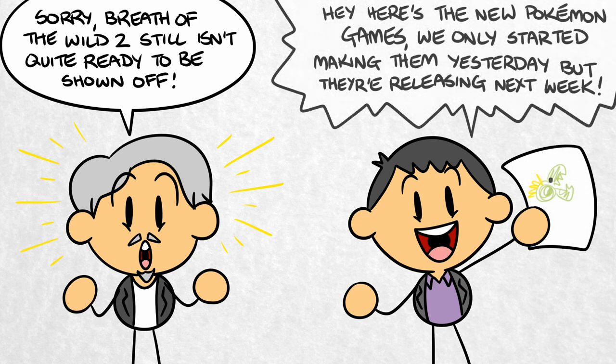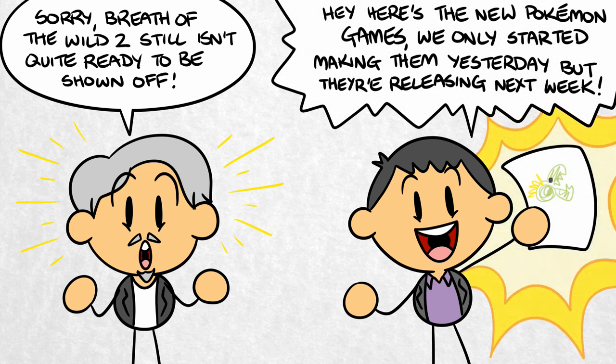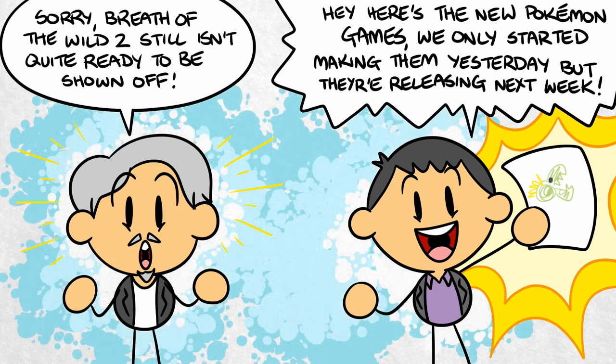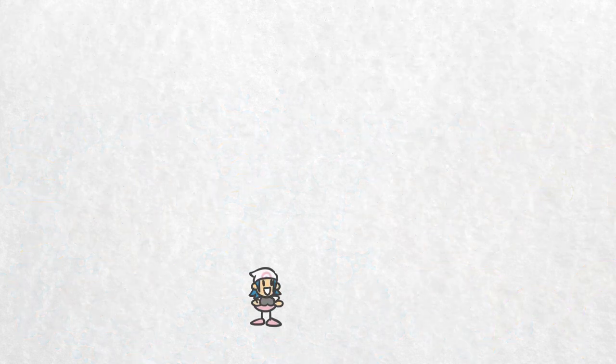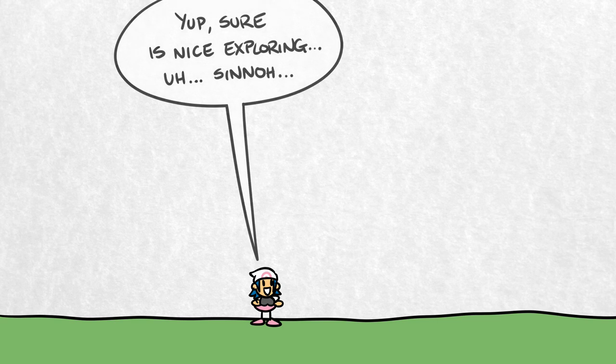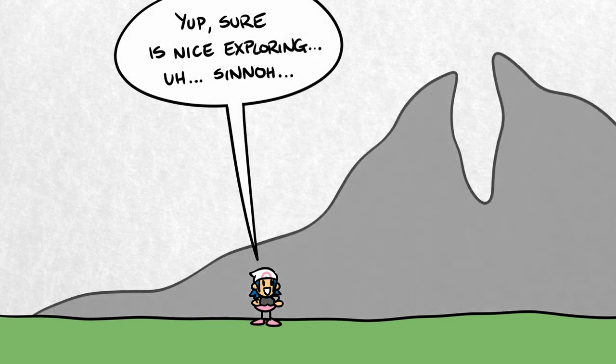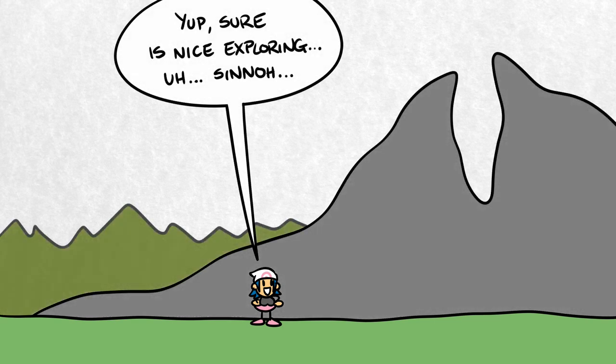The Pokemon Company puts out a new game, or rather, a pair of versions of a new game, every year. With ICLA handling Brilliant Diamond and Shining Pearl, Game Freak essentially have an extra few months to work on Legends Arceus, which means they'll be able to put a little more love and polish into the title.